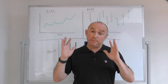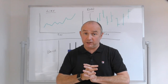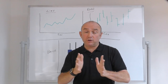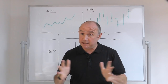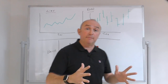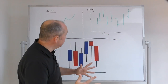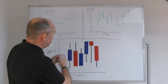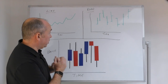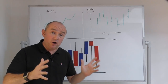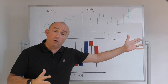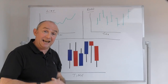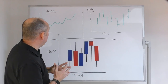Before we get into the specifics of the candlestick chart and the patterns that are thrown up, I want to explain the three different chart types that traders use when trading in the markets. Basically you've got the line chart, the bar chart, and of course the candlestick chart. As with any chart, you normally have time on the horizontal axis and price on the vertical axis.